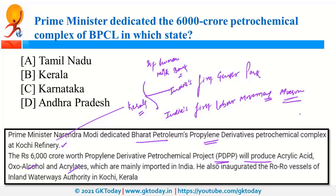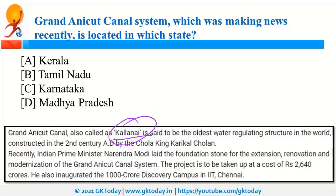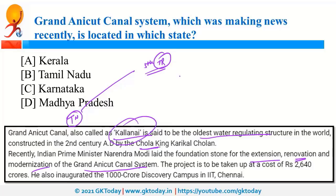The Grand Anicut Canal System, also known as Kallanai, is located in Tamil Nadu. It is one of the oldest water-regulating structures in the world, constructed during the Chola regime. The Prime Minister recently laid the foundation stone for its extension, renovation, and modernisation. Tamil Nadu was also in news for getting its 5th Tiger Reserve and for winning the Syed Mushtaq Ali Trophy, a T20 cricket tournament.